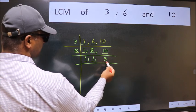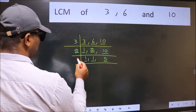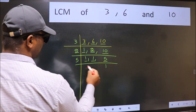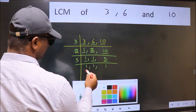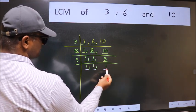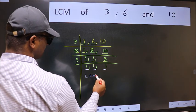So focus on the next number 5. 5 is a prime number, so 5 wants 5. So we got 1 in all the 3 places. So our LCM is,